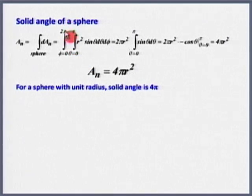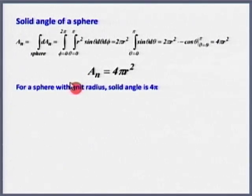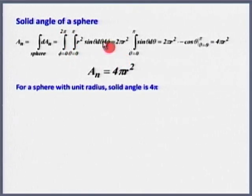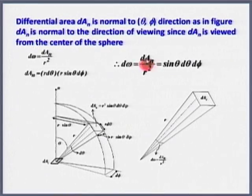Instead of integrating over the full sphere, take the appropriate limits: theta goes from 0 to π/2 and phi from 0 to 2π. You will end up with A_n equal to 2πR² instead of 4πR², and then dividing gives R². So the solid angle for a hemisphere is 2π steradians.